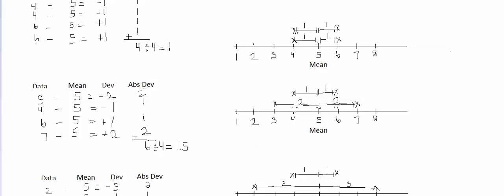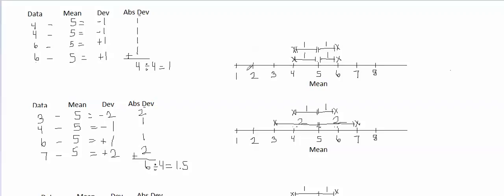Let's think about why the mean absolute deviation is going up. The mean absolute deviation is just the mean of the absolute deviations. If you add the absolute deviations and divide by the number of absolute deviations, you get the mean absolute deviation. And each of the absolute deviations is just the distance from the data value to the mean.